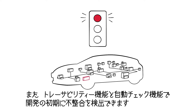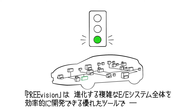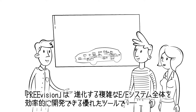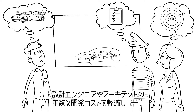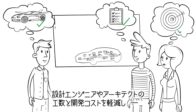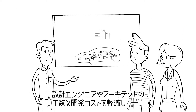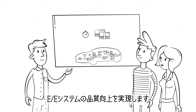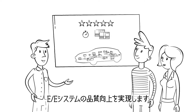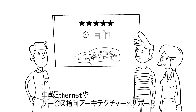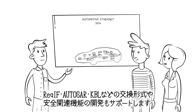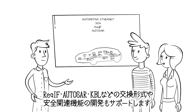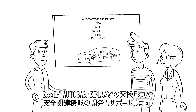The integrated traceability and automatic checks promote detection of inconsistencies in early stages. All this makes PreVision a unique tool aligned to completely and efficiently develop the complex EE systems of the future. The extensive features and functions help designers, architects and engineers to save costs and development time, while improving the overall quality of EE systems. PreVision supports technologies such as automotive Ethernet and service-oriented architectures, interchange formats like REC-IF, AUTOSAR and KBL, as well as the development of safety-relevant functions.